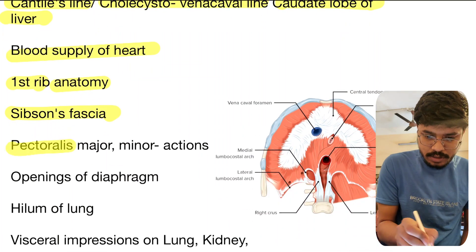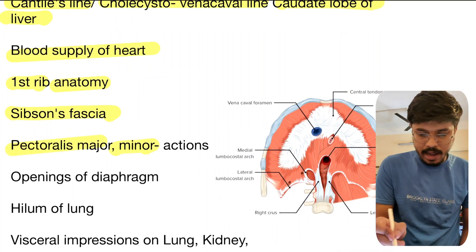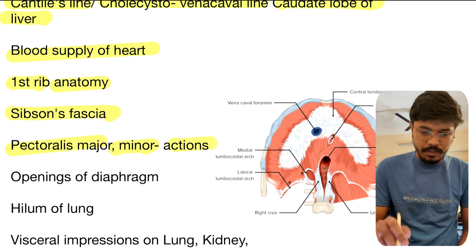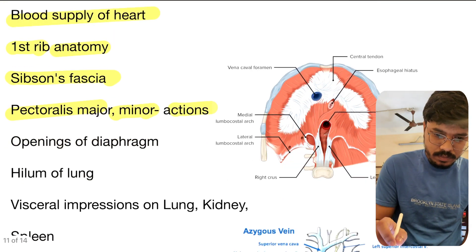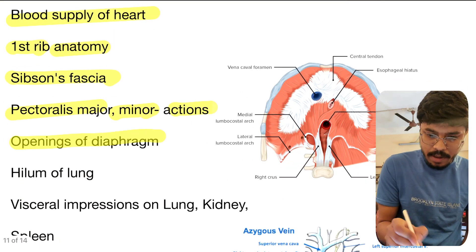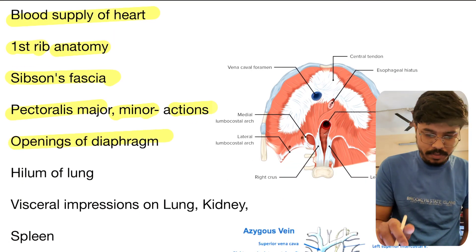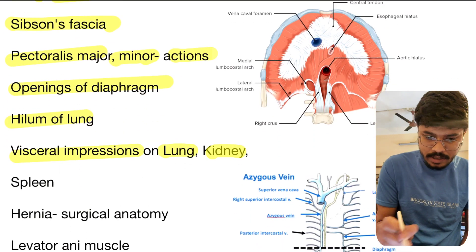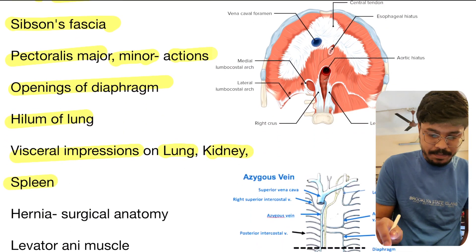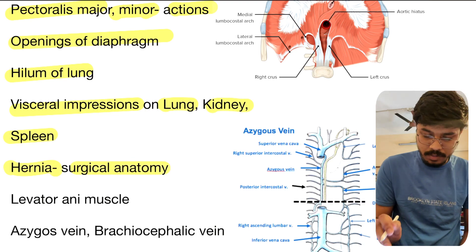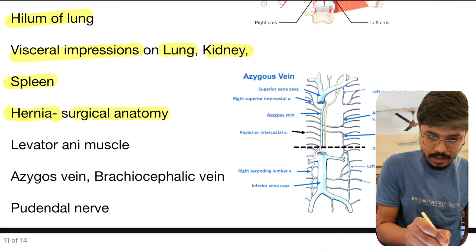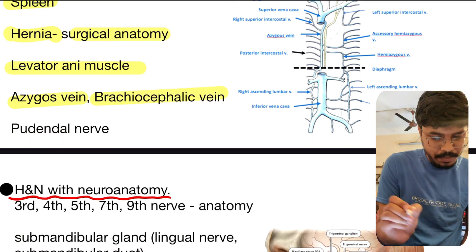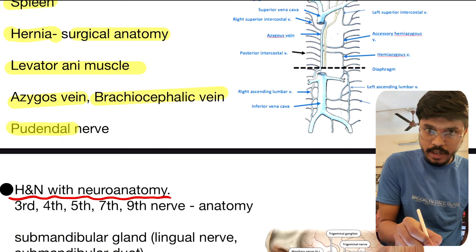Sibson's fascia, pectoralis major and minor actions and nerve supply are important. Levator scapulae is another important muscle. Openings of the diaphragm is an important topic. Hilum of lung, visceral impressions on lung, kidney, spleen, hernia surgical anatomy. Levator ani muscle, azygos venous system, brachiocephalic vein, and pudendal canal are also key.